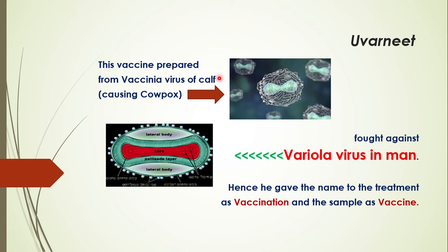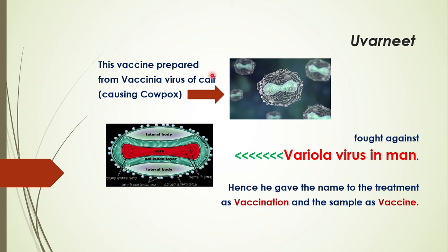He prepared a vaccine using the vaccinia virus taken from a cow suffering from cowpox infection. He injected it into a healthy man and later found that this preparation was able to fight against the variola virus in man. Hence he gave the name 'vaccination' to the treatment and 'vaccine' to the sample, after the vaccinia virus that causes cowpox infection in the cow.